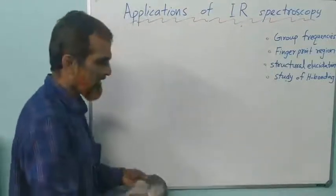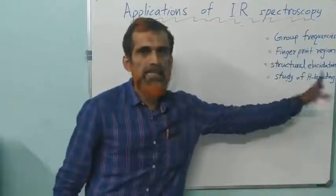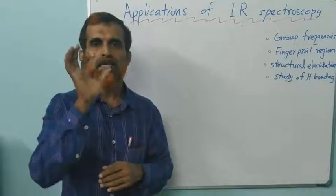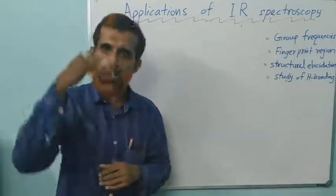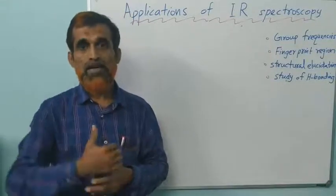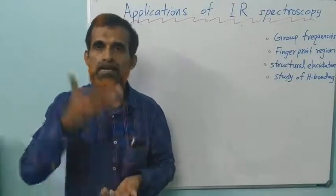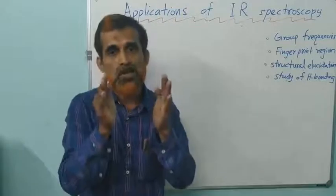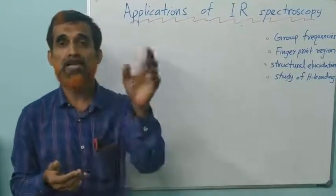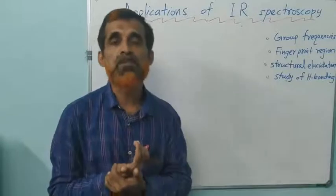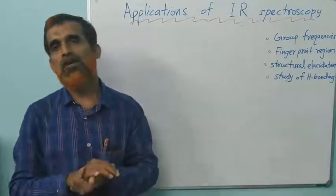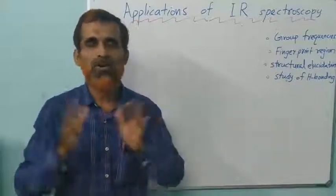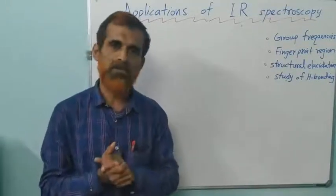Finally, IR spectrum is used for studying hydrogen bonding. Due to hydrogen bonding, especially OH and NH frequency lowers. Greater the hydrogen bonding, greater the lowering. By noting the extent of lowering of IR frequency of NH and OH groups, we can study about the extent of hydrogen bonding in a molecule. That's all in IR spectroscopy. Thank you for watching this video.